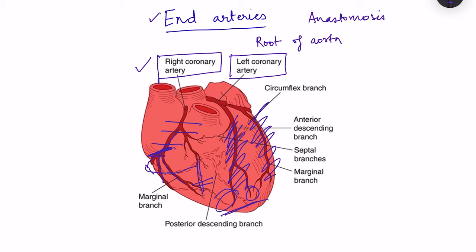This lack of anastomosis is mainly in the larger arteries of the coronary circulation. When we consider the smaller branches — very small branches in the size range of 20 to 50 micrometres — anastomosis is present. So blockage of a major artery will lead to ischemia and ultimately infarction, but some salvage occurs because of collaterals in these smaller arteries. Also, if blockage develops slowly, as in atherosclerosis, these smaller anastomoses actually increase and can partially prevent the damaging effects.